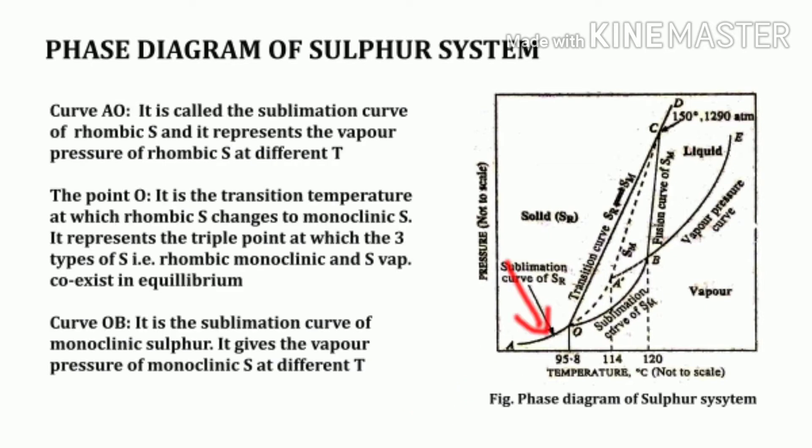The curve OA represents the sublimation curve of rhombic sulfur, giving the vapor pressure of rhombic sulfur at different temperatures. The two phases in equilibrium along this curve are rhombic sulfur and sulfur vapor. Since this is a two-phase, one-component system, applying the phase rule gives F = 1, meaning it is monovariant. The point O is the transition temperature, 95.6°C, at which rhombic sulfur changes into monoclinic sulfur.